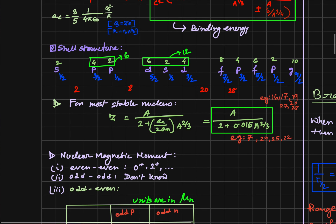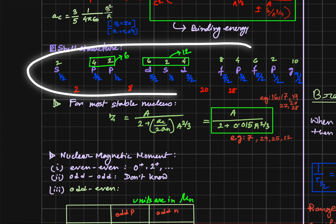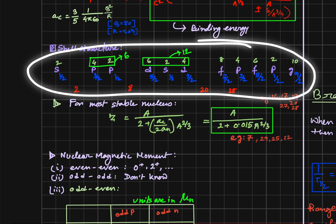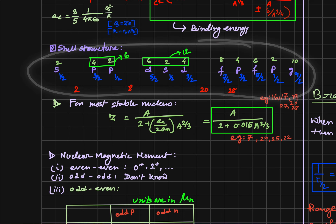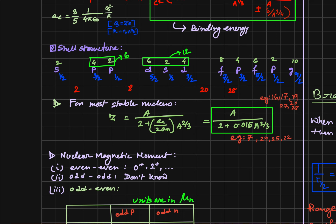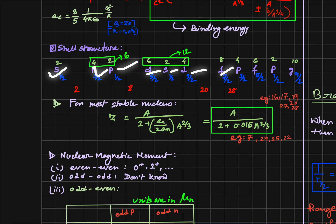A lot of questions come from the shell structure. I remember the orbital sequence like this: S, P, P, D, S, D, F, P, F, P, G. These are the L values — for S, L equals 0; for P, L equals 1, and so on. And these are the J values.